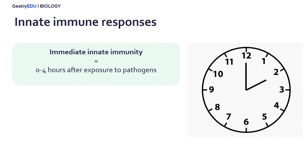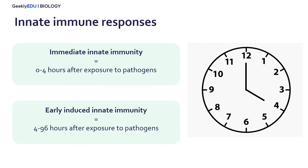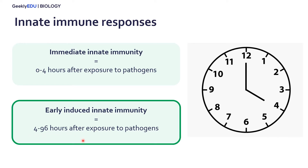Within our innate immune responses, we have our immediate innate immunity, which happens zero to four hours after exposure, and then we have our early induced innate immunity, which happens a little bit later from four to 96 hours after exposure to a pathogen. Today we're just going to talk about the early induced innate immunity.